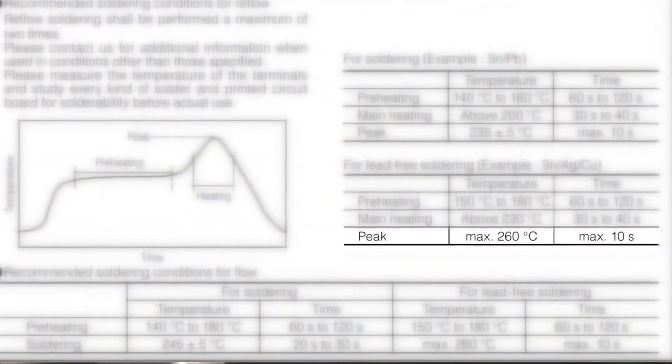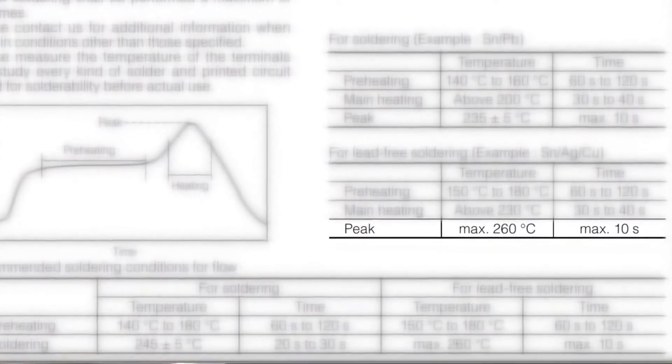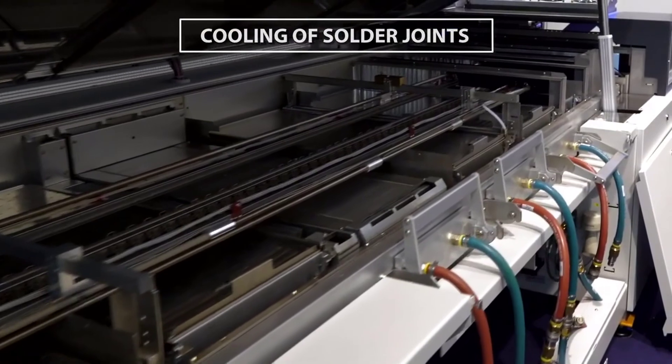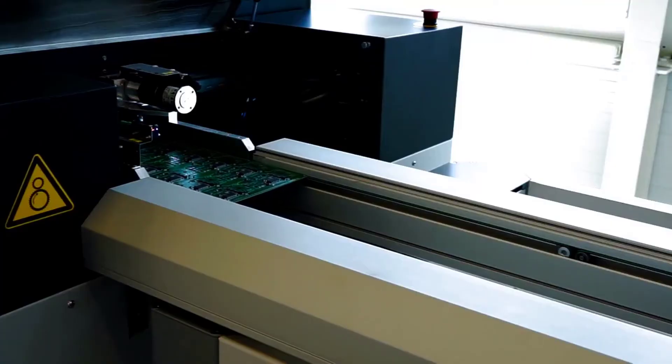The component that has the lowest maximum temperature allowance will define the maximum allowable temperature. The process board is cooling down in the last zones of the reflow oven. The solder alloy solidifies to make the solder joints.